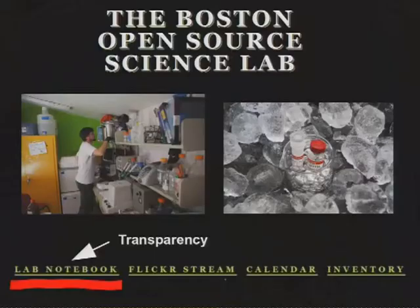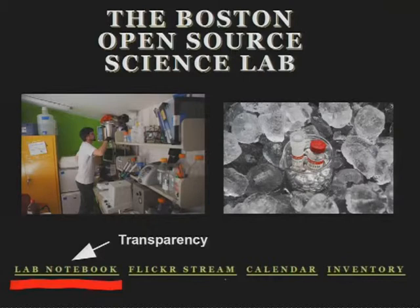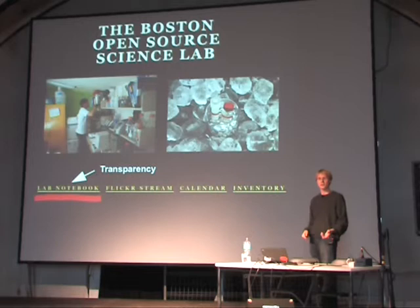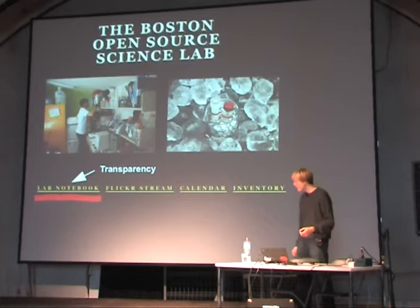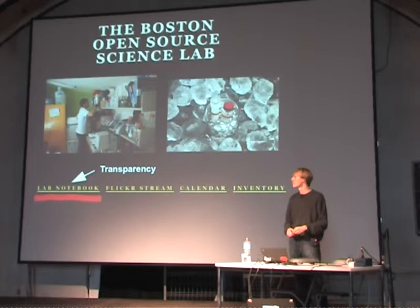There's also the BOSSLAB in Boston — they have a little space inside the Sprout hackerspace — and they have extreme transparency: you can go to their website and see all their lab notes. Everything they do is logged — you can see everything, even if it fails or they spill a chemical they shouldn't have. This is really important because some people are worried about garage biologists working on synthetic systems, so it's important to be very transparent and open about what we do.